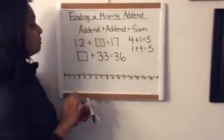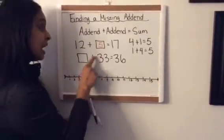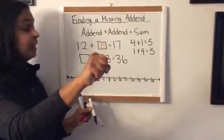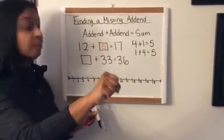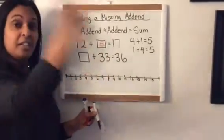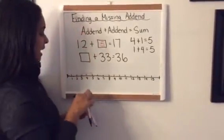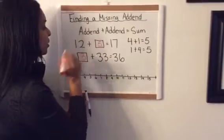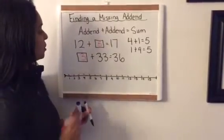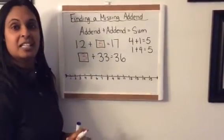Again, I'm going to use my same strategy. So I'm going to grab that addend that I know in my hand and I'm going to count up to find out what my second addend is: 33, 34, 35, 36. And I just went up three on my fingers. So three plus 33 equals 36.